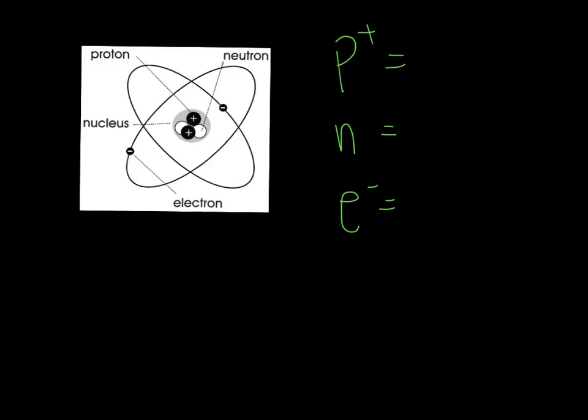Alright, so this is the last example I have prepared. Go ahead and push pause and see if you can come up with the number of protons, neutrons, and electrons looking at this model, and see if you can come up with the atomic number and the atomic mass, and then push play to check and see if you were right. So go ahead and push pause.